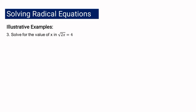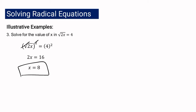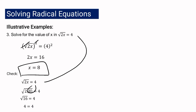For example 3, we have: square root of 2x equals 4. We proceed by squaring both sides since the index is 2. Squaring cancels the radical, giving 2x equals 16. Dividing both sides by 2, x equals 8. To check: 2 times 8 is 16, and the square root of 16 is 4. So 4 equals 4, confirming x equals 8 is correct.